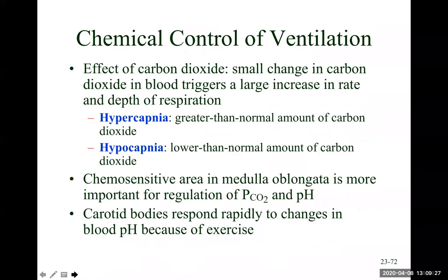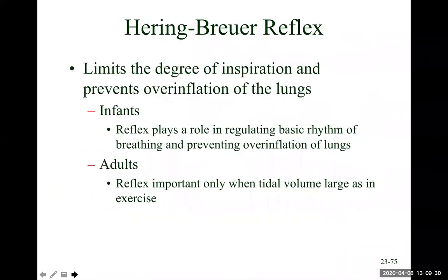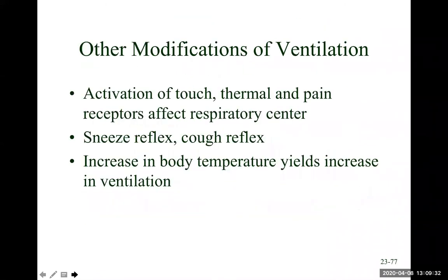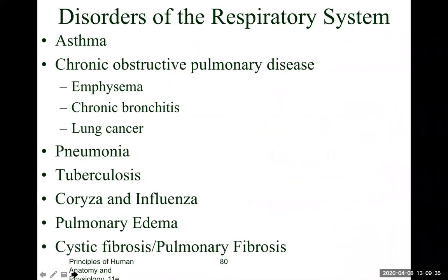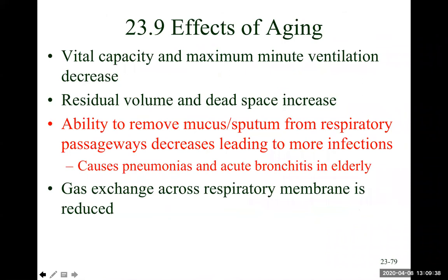Let's review these chemoreceptors, and then we'll go through some of the diseases. By now you've heard about what happens with aging and what happens to people with COVID — maximum minute ventilation decreases, dead space increases. And there's a big one: the ability to remove mucus from the respiratory system decreases. So then you have more infections from things that we can normally get rid of, which can cause pneumonias and acute bronchitis in the elderly.